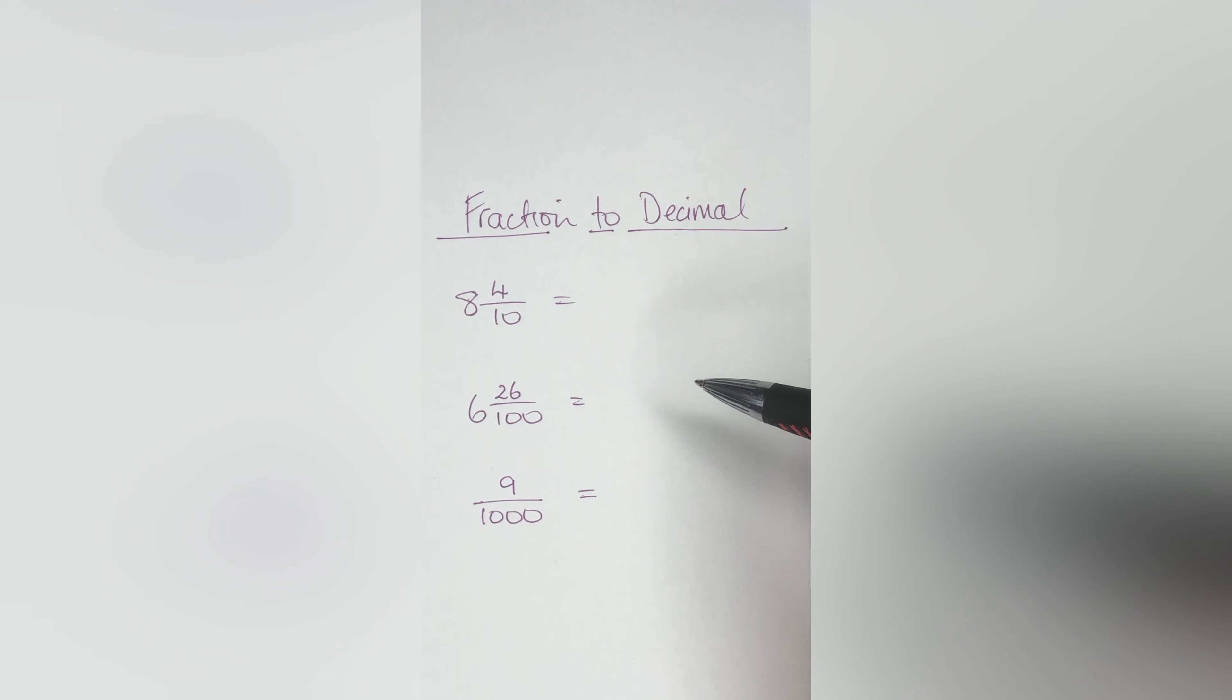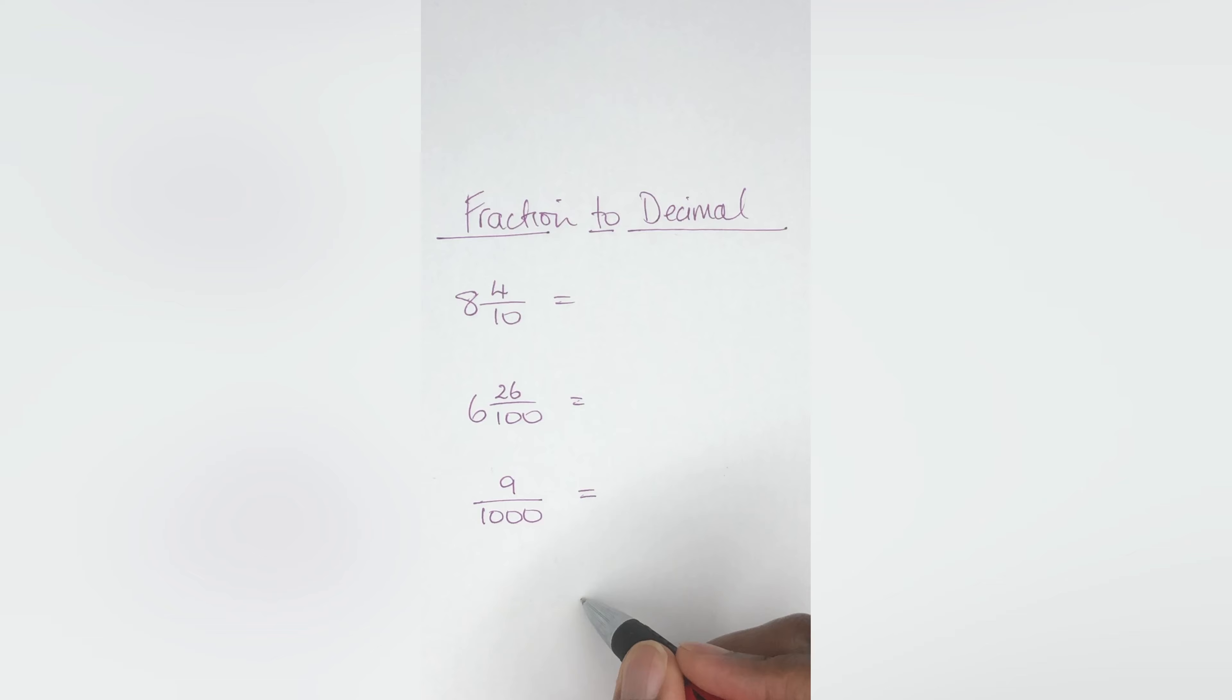The first thing to know is that you have to know the place values for decimals. I'm going to show you quickly down here what the place values are. Usually when you see a decimal, you have your usual ones, tens, and hundreds place, which goes on this side of the decimal.